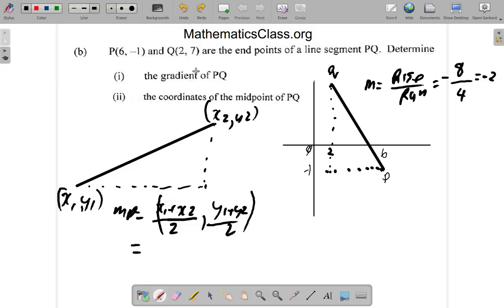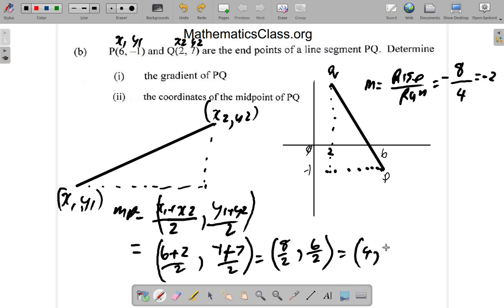So the midpoint is what? We have this as X1, Y1, this as X2, Y2. X1 is 6 plus X2 is 2, half of that, comma, Y1 is -1 plus Y2 is 7 over 2. So we have 6 and 2 is 8 over 2, so -1 plus 7, -1 plus 7 is going to be positive 6 over 2. So the midpoint is really 8 over 2 is what? 4. 4, comma, 3. 4, 3.